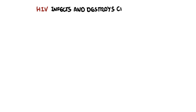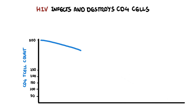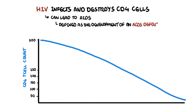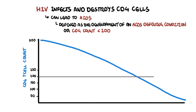HIV infects and destroys CD4 T cells. Over time, CD4 cell counts go down from 1000 cells per microliter to below 50 cells per microliter. Without treatment, HIV can lead to AIDS, known as Acquired Immunodeficiency Syndrome. AIDS is defined as the development of an AIDS-defining condition or a CD4 count less than 200 cells per microliter in someone with HIV.